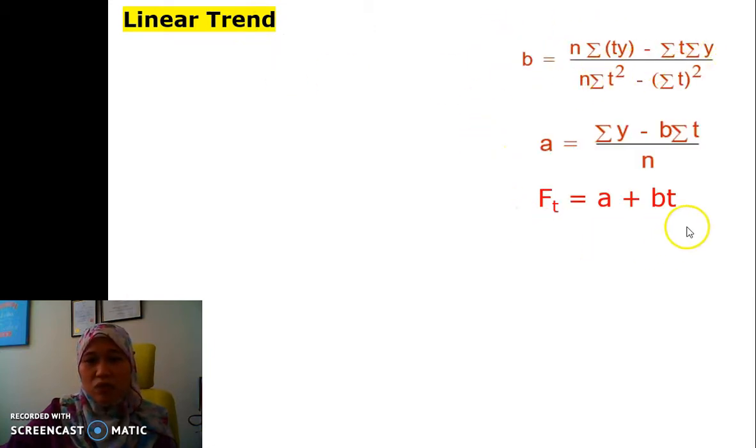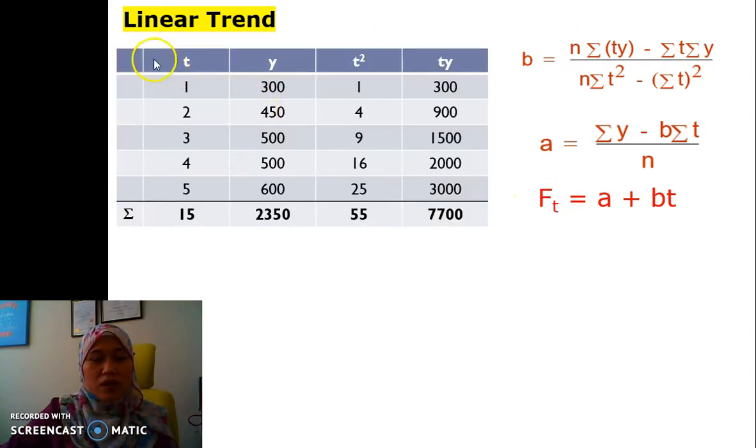Then we move to the linear trend question. We want the forecast for December. First we need to find b, then we need to find a, and then the main important thing is to find this equation so that we can get the F12. First, we need to have time here. These are the months that we convert to numbers, and these are the y, the actual. The information that we need is t, y, sum of t, sum of y, sum of t squared, and sum of ty.